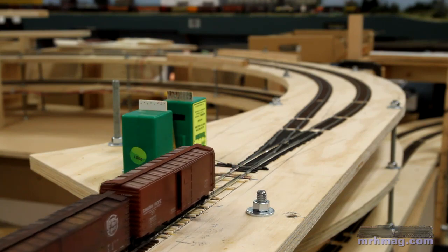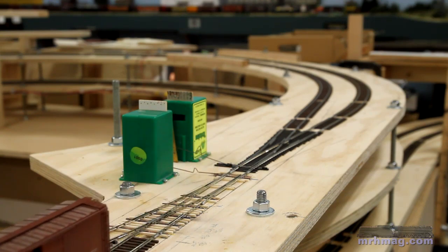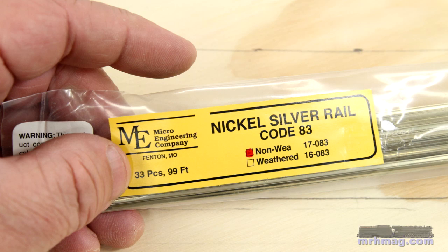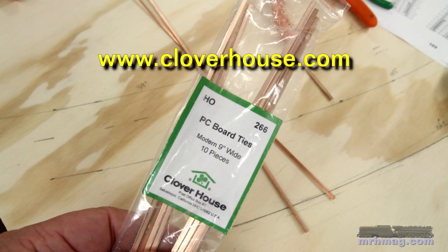I'd like to show you how I scratch-build turnouts using only homemade jigs. I used Microengineering Code 83 rail and PC ties from Clover House for this turnout. Other materials used include solder and non-acid flux.